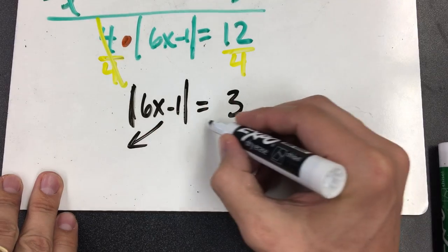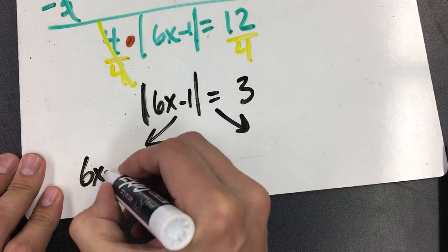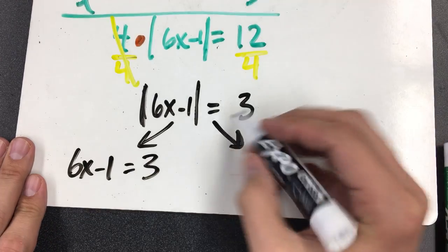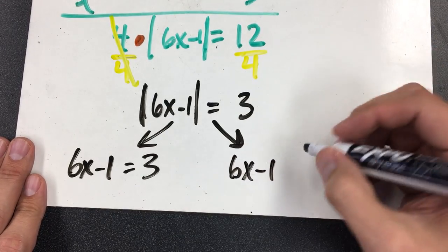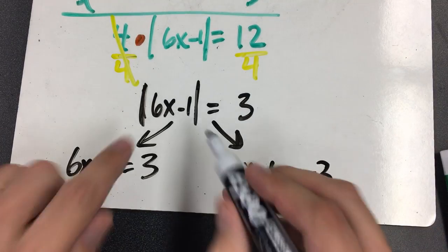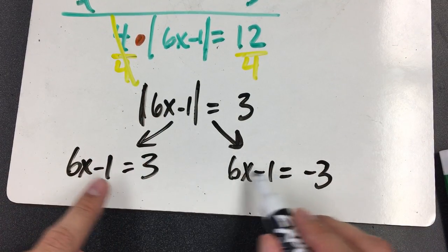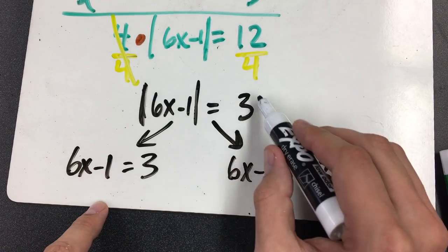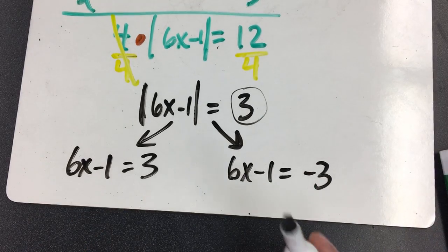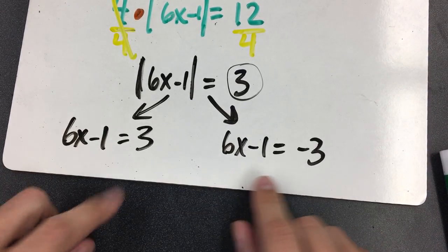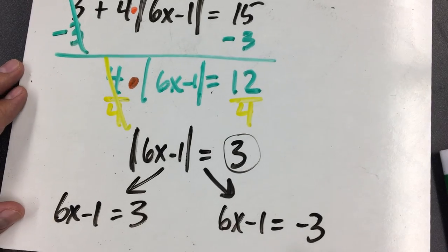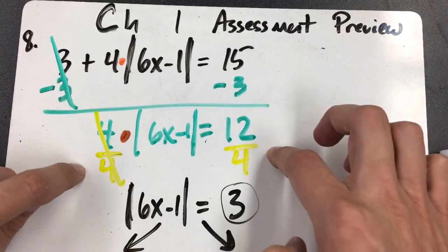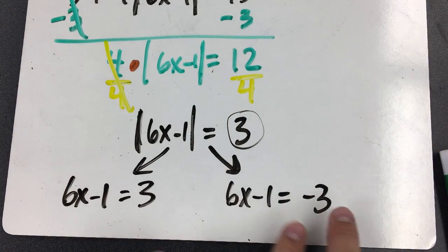Then you split it into two problems. On one side you do 6x minus 1 equals 3, and on the other side you do 6x minus 1 equals negative 3. You take the stuff inside the absolute value and solve it for positive, then solve it again for negative. That's number 8: isolate the absolute value, then split into positive and negative.